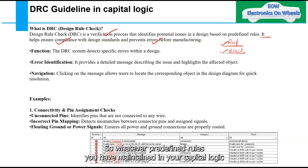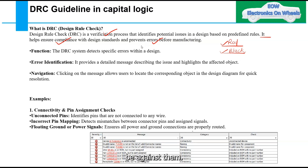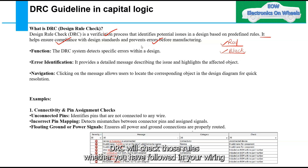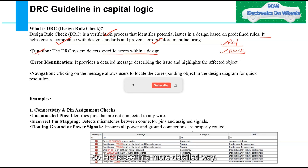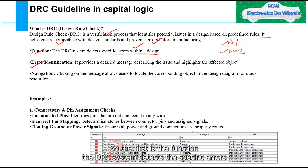DRC helps ensure compliance with design standards and prevents errors before manufacturing. Whatever predefined rules you have maintained in Capital Logic, DRC will check whether you have followed them in your wiring diagram. If not, it will throw an error.